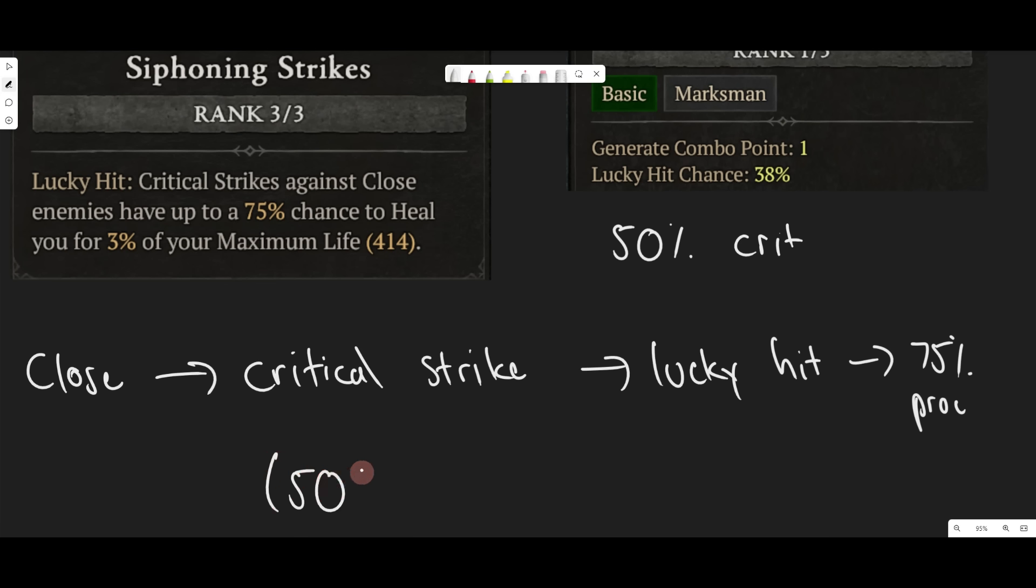So we have a 50% chance at this point, so 50% of our hits. Then we have to Lucky Hit. So now we'd have to multiply this by 38%, since 38% of our critical strikes are going to Lucky Hit. And then we have a 75% chance to proc, which if we multiply this, that would be equal to 0.5 times 0.38 times 0.75, which gives us 14.25% chance.